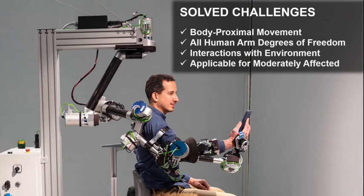To conclude, with our new exoskeleton design we could overcome dimension challenges. We can now train body proximal movements, all of the human arm's degrees of freedoms were included, and we can train and perform activities of daily living including interactions with the environment. Further, the robot is also applicable for moderately affected patients who want to recover speed and use a robot with much higher velocities.